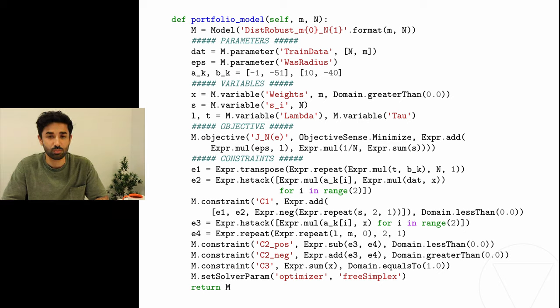The second constraint involves an infinity norm and that can be modeled using two inequalities as shown in the code. The third constraint that restricts the asset weights to a probability simplex is very straightforward to implement. Lastly, I tell Mosek to use the simplex optimizer. Since we are solving a linear program, we can use either the interior point optimizer or the simplex optimizer. By default, Mosek will use the interior point optimizer.